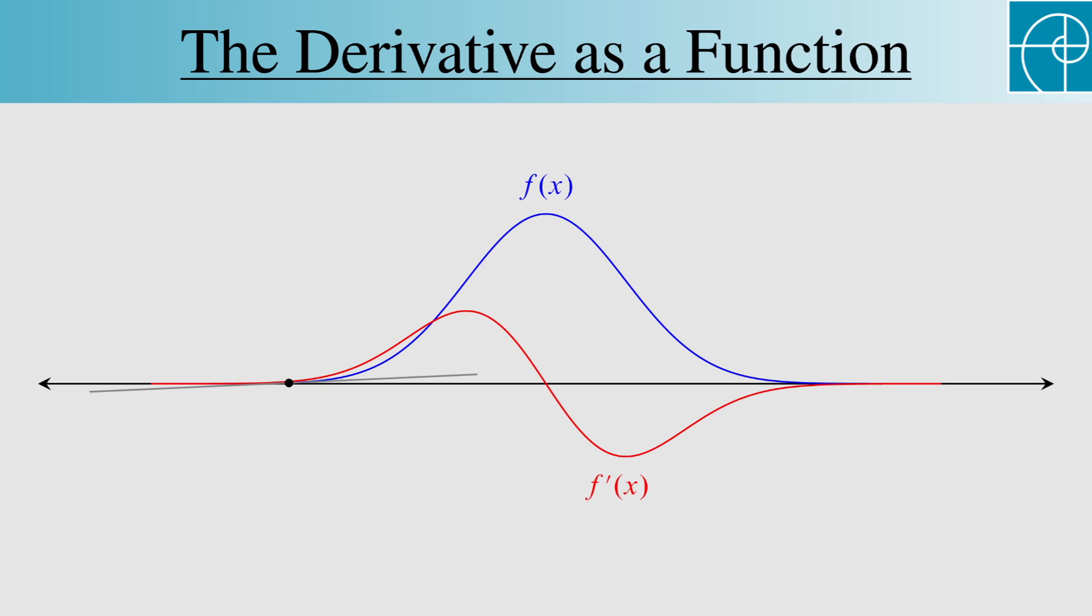Now let's add the graph of the derivative. We see that it's positive where f is increasing, zero at the peak, and negative where f is decreasing.